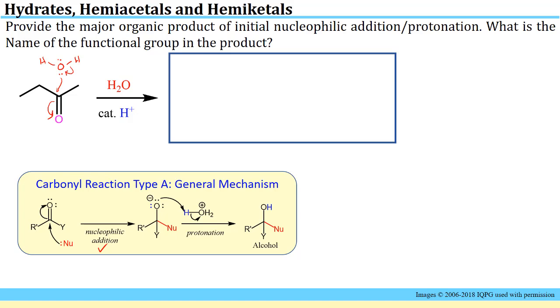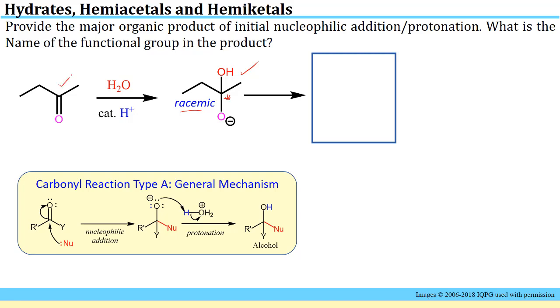At some point, we'll also have to lose an H from this oxygen, deprotonated to form a neutral species. We'll initially form this material shown here, and this is a racemic mixture because we have generated a chiral center from an achiral starting material.